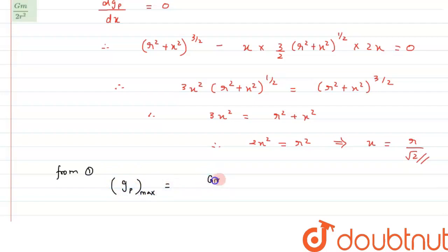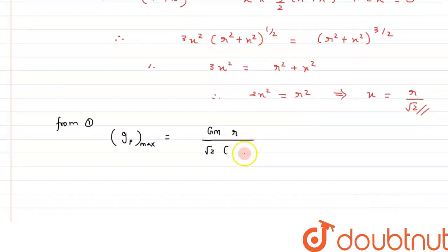as GM times X, can be written as R by root 2, times R² plus X², can be written as R² by 2, raised to 3/2. So if we solve this value further,